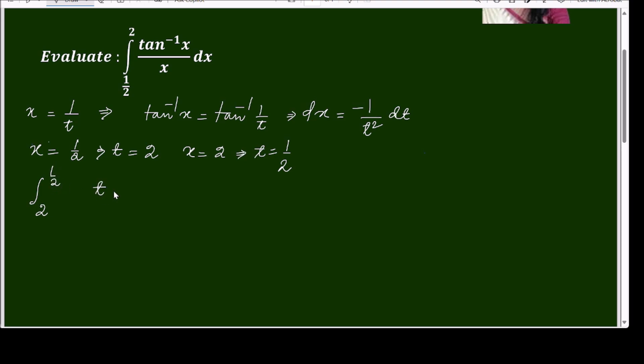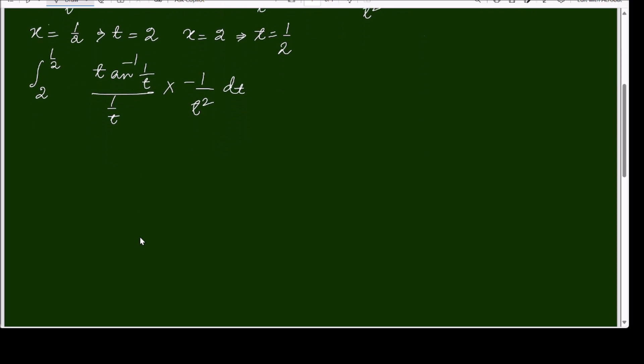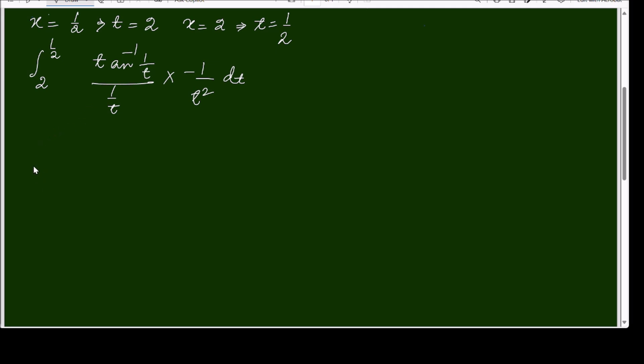It will be tan inverse 1 by t over 1 by t. In the next line, this t will be cancelled with t, so it will be 2 to half tan inverse t over t—sorry, tan inverse 1 by t over t dt.